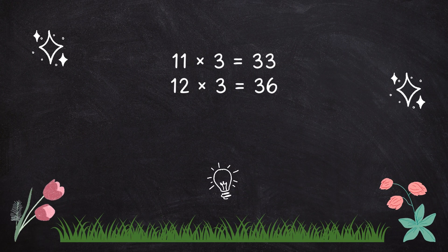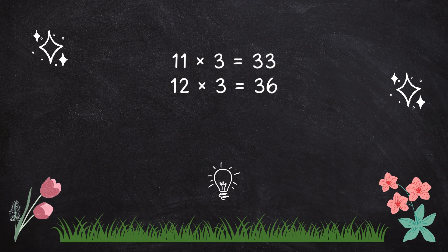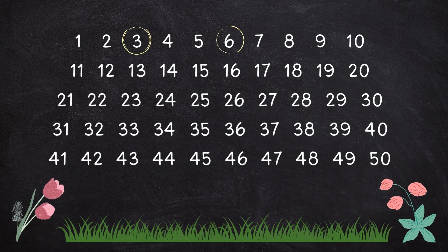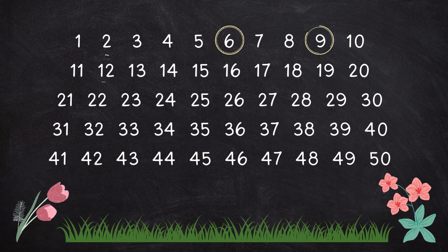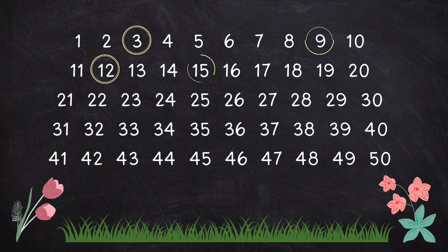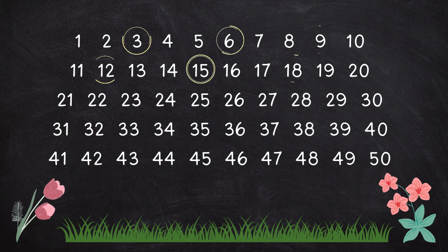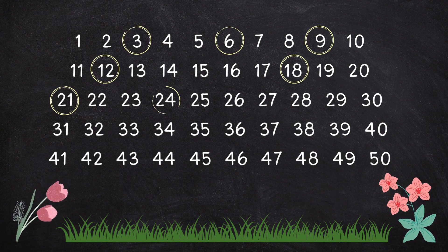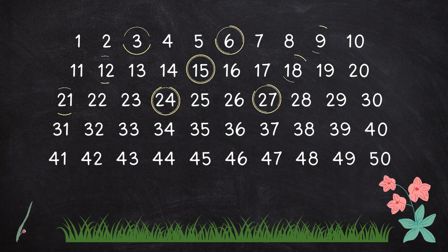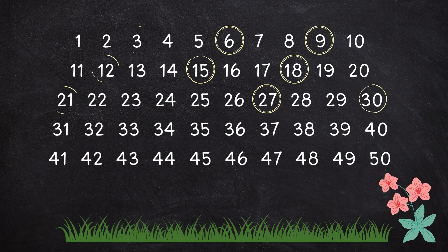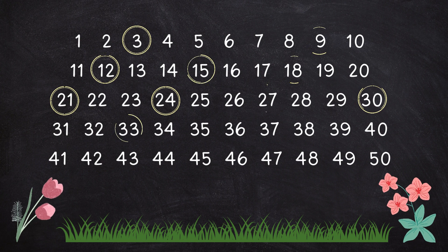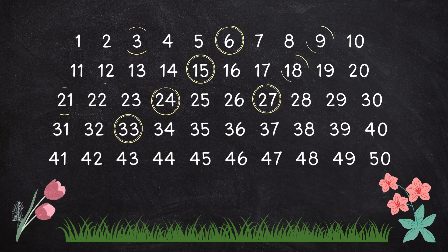12 times 3 is 36. 3, 6, 9, 12, 15, 18, 21, 24, 27, 30, 33, 36.